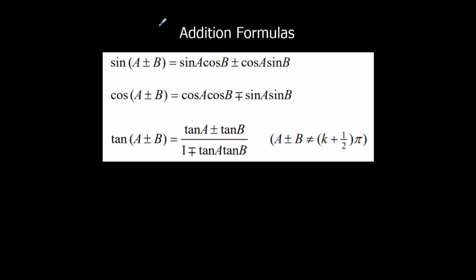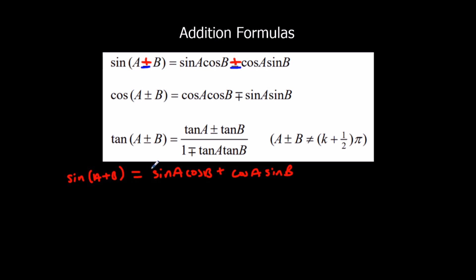So, to read them: we've got sin(A ± B) on the left side, and sin A cos B ± cos A sin B on the right side. There are two different formulas hidden in the same formula. If we use the top sign from the left side, that goes with the top sign from the right side. And if we use the bottom sign from the left, that's the bottom sign from the right. So that means sin(A + B) = sin A cos B + cos A sin B, or sin(A − B) = sin A cos B − cos A sin B.